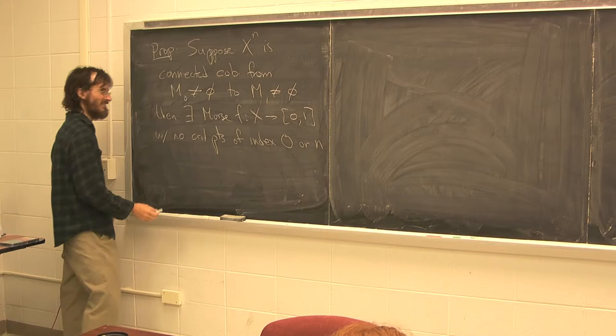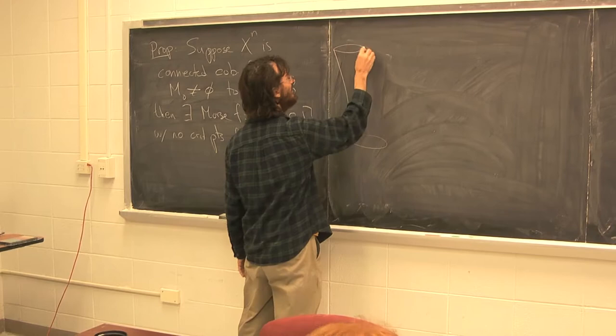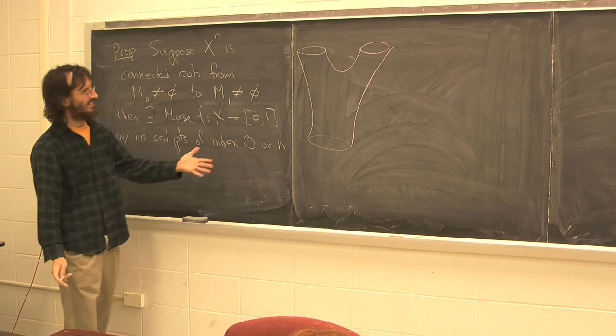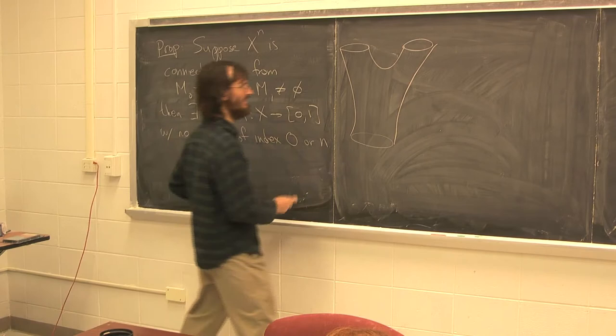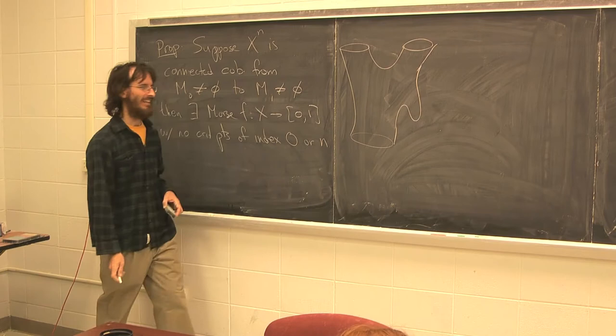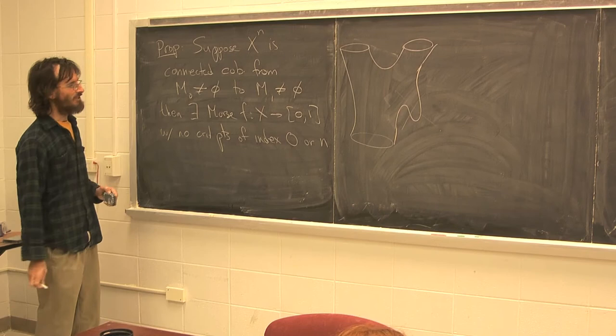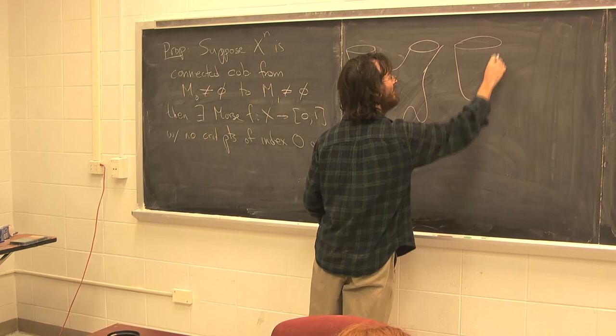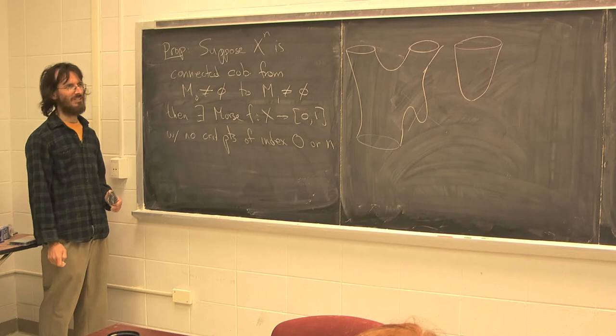The point is, just as an example, I'm going from something, the whole thing is connected, and the bottom and the top are non-empty, so I don't expect to be at a minimum anywhere. That is unnecessary — it can happen, but it's unnecessary. And of course, if the manifold is disconnected, you might have something like this. In that case, that index-0 critical point is essential because the manifold is disconnected.